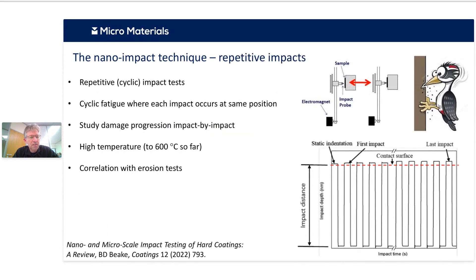We were historically primarily interested in this test as a fatigue simulation tool — repetitively cycling the load, just like a woodpecker tap-tap-tapping. After a certain number of impacts you get material removal, making it a very effective test method to introduce damage to surfaces. We did it at various temperatures and it correlates very nicely with erosion.